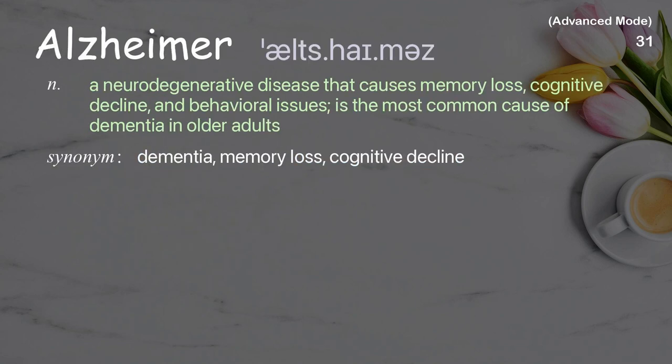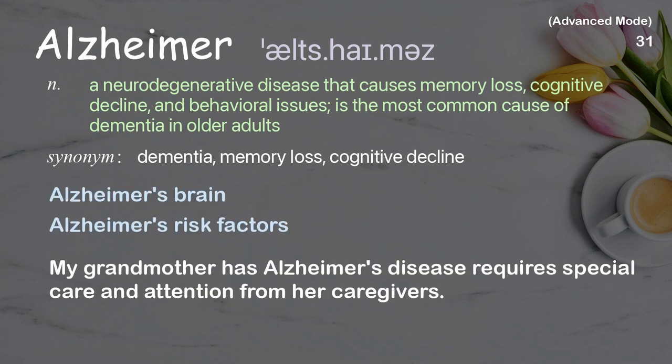Alzheimer's: a neurodegenerative disease that causes memory loss, cognitive decline, and behavioral issues; it is the most common cause of dementia in older adults. Examples: Alzheimer's brain, Alzheimer's risk factors. My grandmother has Alzheimer's disease and requires special care and attention from her caregivers.